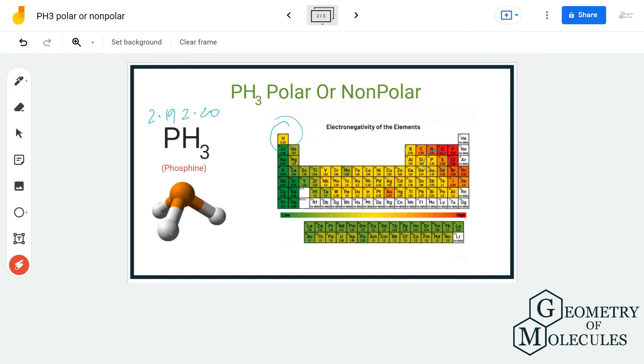When you look at it in 3D, you can see that due to this lone pair, the hydrogen atoms are shifted downwards and that does create a partial distribution of charges.